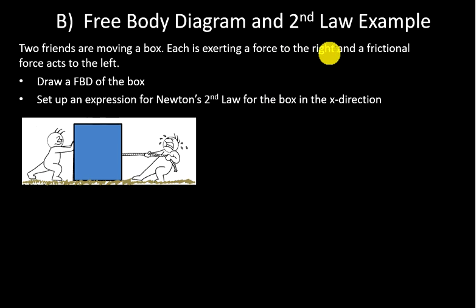Part B, free body diagram example along with setting up Newton's second law. So we have two friends that are moving a box. Here's our box. Maybe it's a refrigerator. Maybe it's a large Amazon box and they're sliding it to the right. Each is exerting a force, but there's also an opposing force. There's some kind of opposing frictional force. That's going to act in the opposite direction.